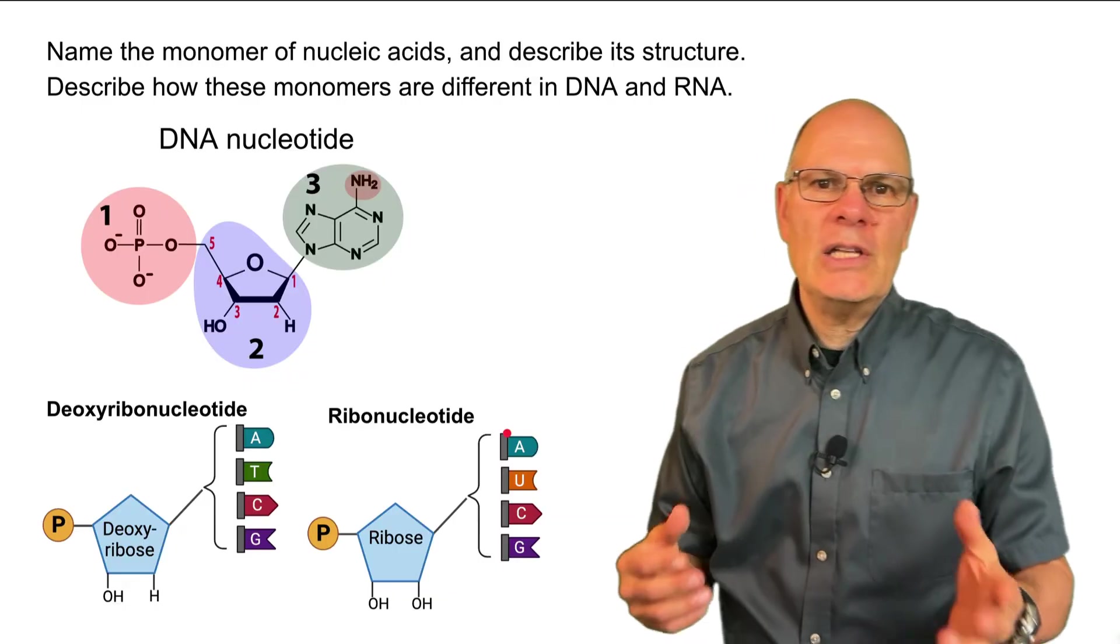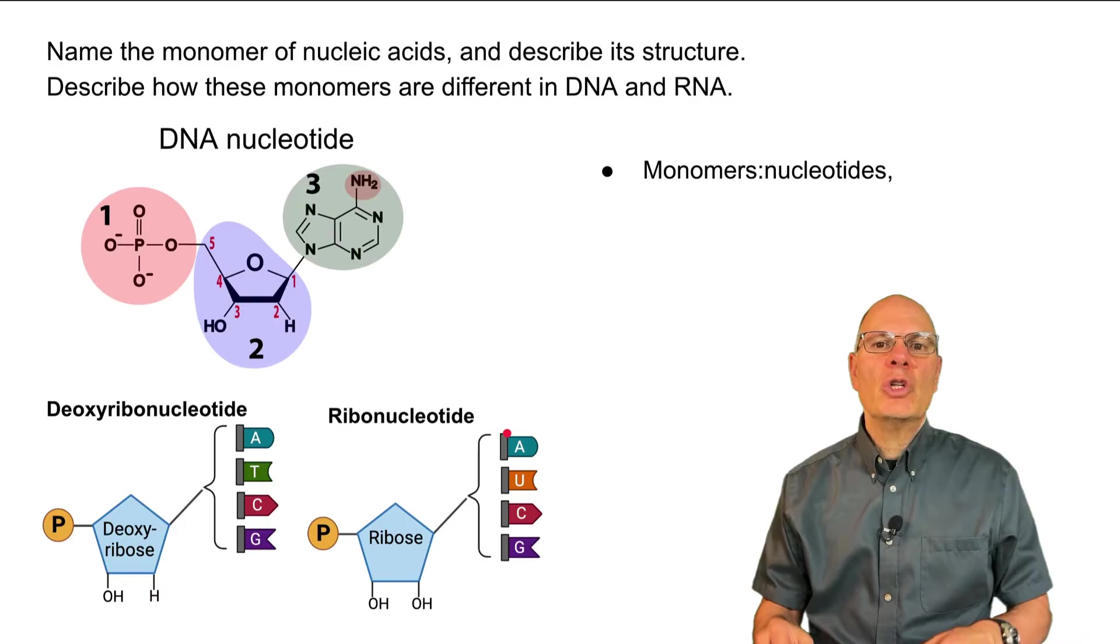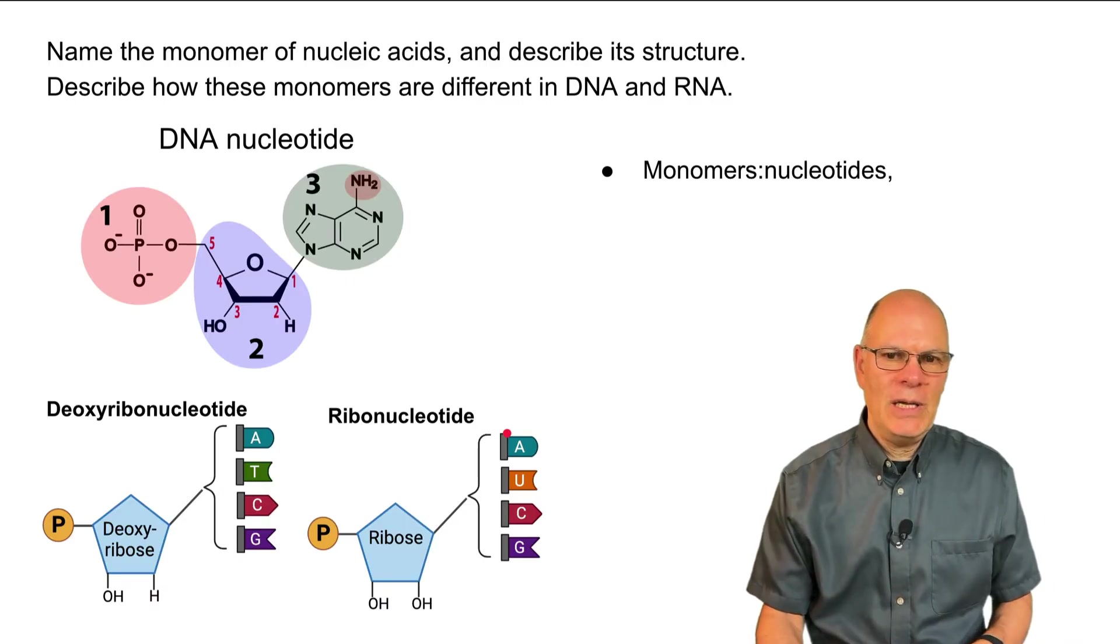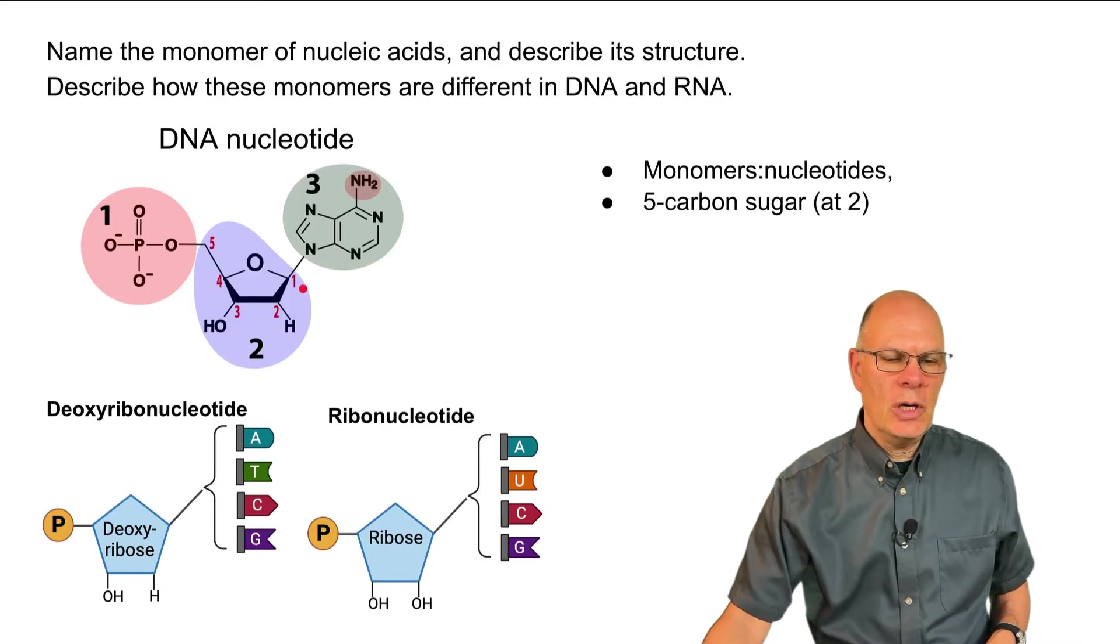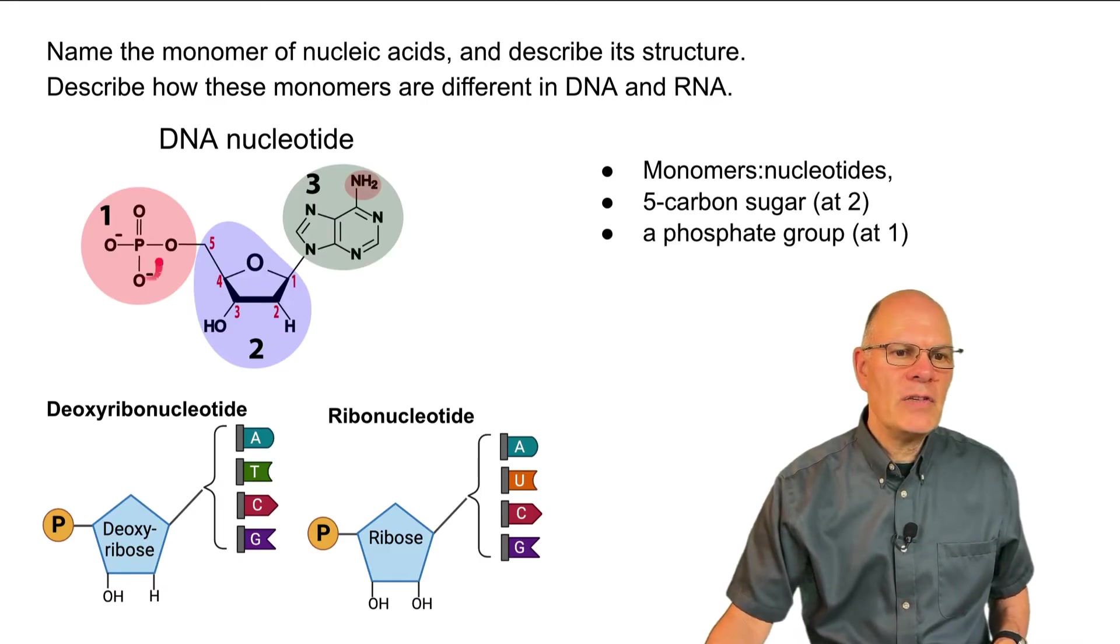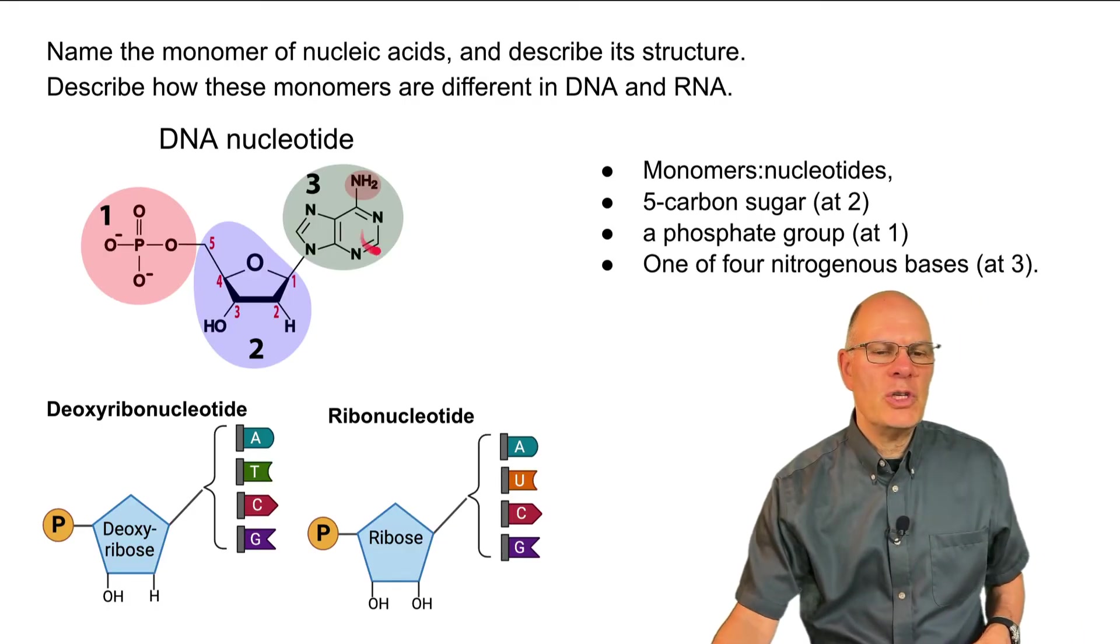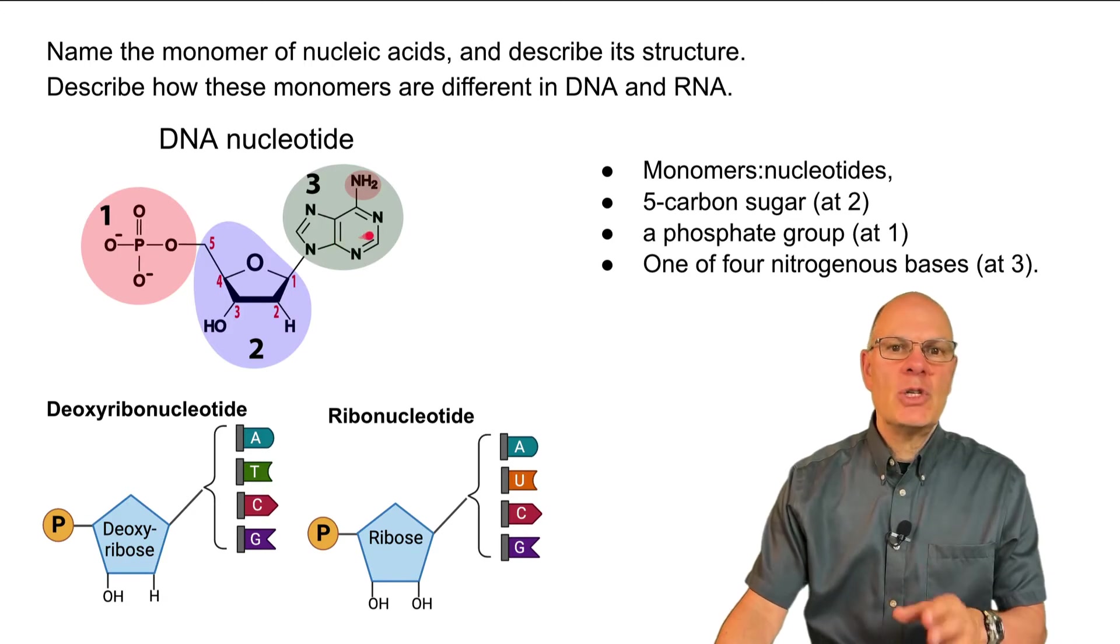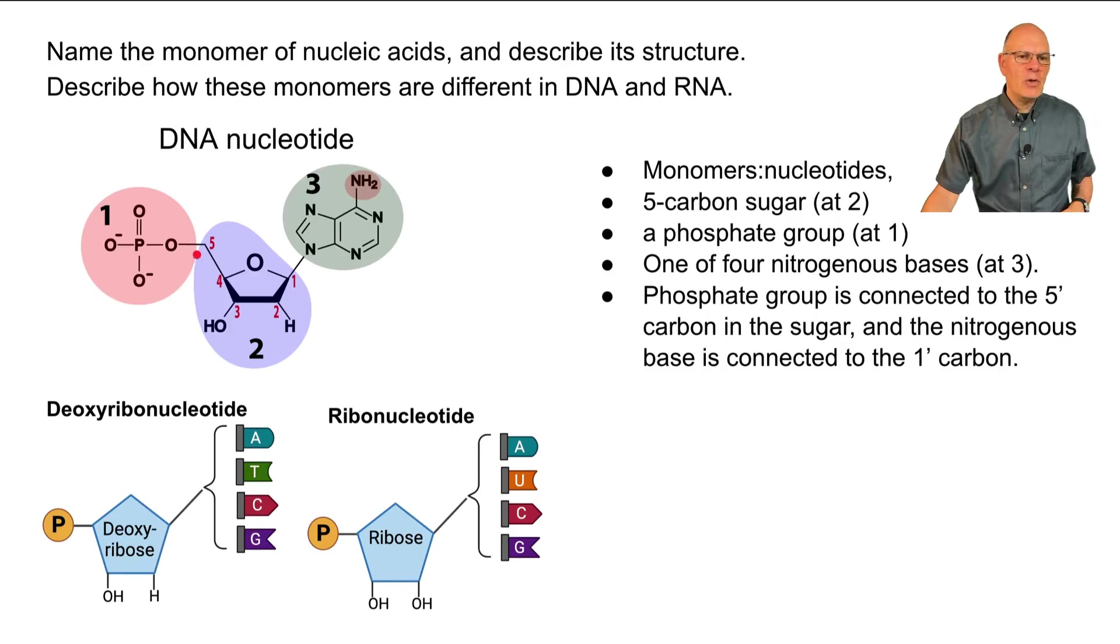What is the monomer of nucleotides? What's its structure? How are these monomers different in DNA and RNA? The monomers are called nucleotides. We just looked at ATP. All of these molecules have a five carbon sugar that's shown at number two. They have a phosphate group that's shown over here at number one. And then there's one of four nitrogenous bases. So the nitrogenous base doesn't have to have this structure. Note that the phosphate group is connected to a number five carbon, whereas the nitrogenous base is connected to the number one carbon.